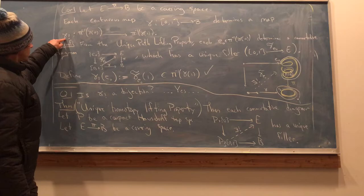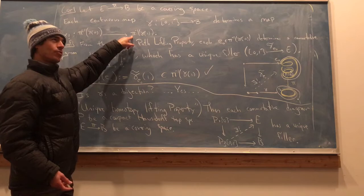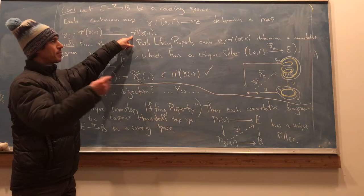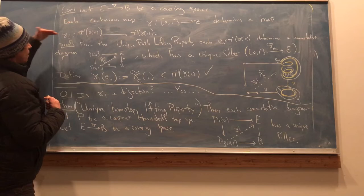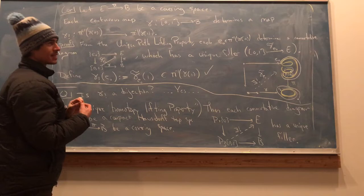But how do you know that gamma shriek followed by gamma shriek where gamma is the path running backwards, how do you know that composite is the identity here? So if you run a path one way and then just retrace yourself back, the associated monodromy map, how do you know that that's the identity?